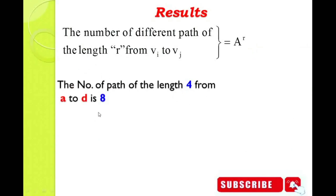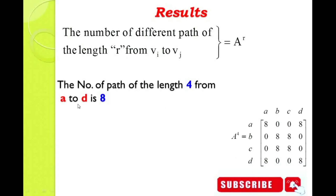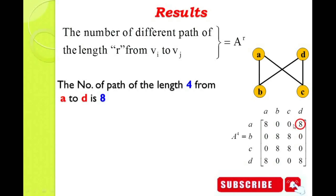Third question: find the number of paths of length 4 from vertex A to D. The answer is 8 — there are eight different paths. One path: A to B, B to D, D to C, C to D — reaching D with 4 edges. Another path: A to C, C to D, D to B, B to D. By using the same method, we get eight different paths from vertex A to D.